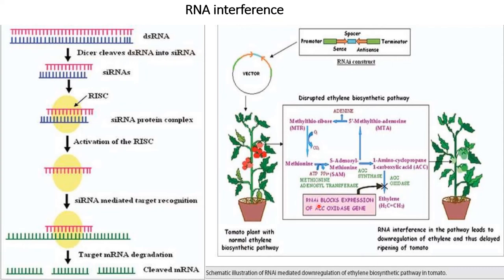This same process was utilized in the ethylene biosynthesis pathway, so that RNA interference blocked the expression of ACC oxidase, which is involved in the final step of ethylene biosynthesis. Since ACC oxidase was blocked, ethylene synthesis will be downregulated, and thus the ethylene production in the tomato fruit will be delayed, leading to the delay of ripening of the fruit.